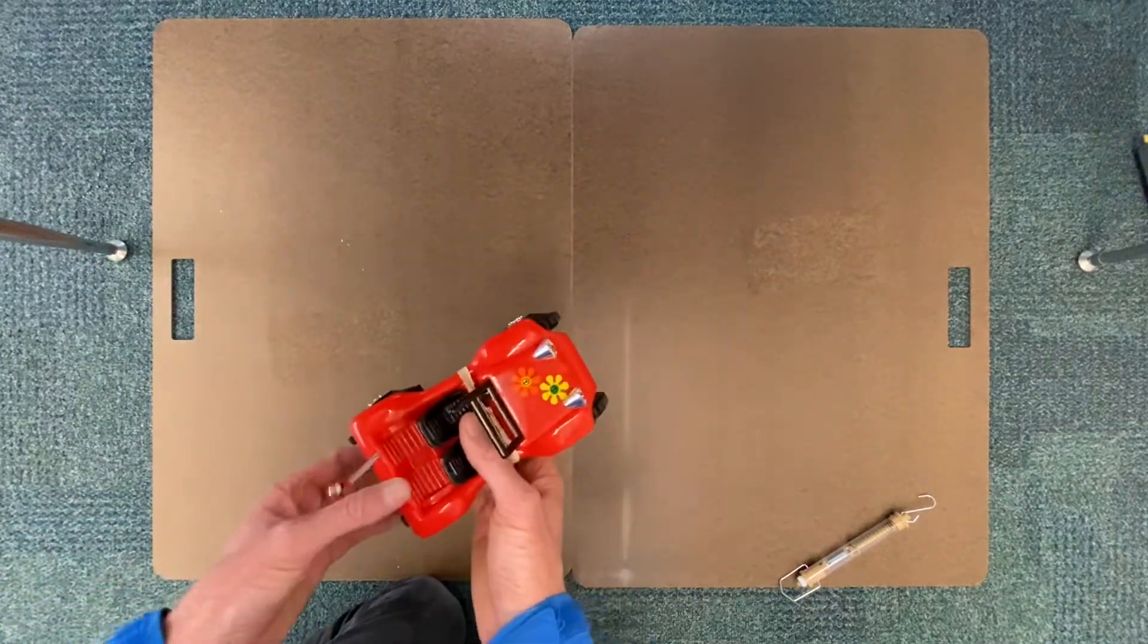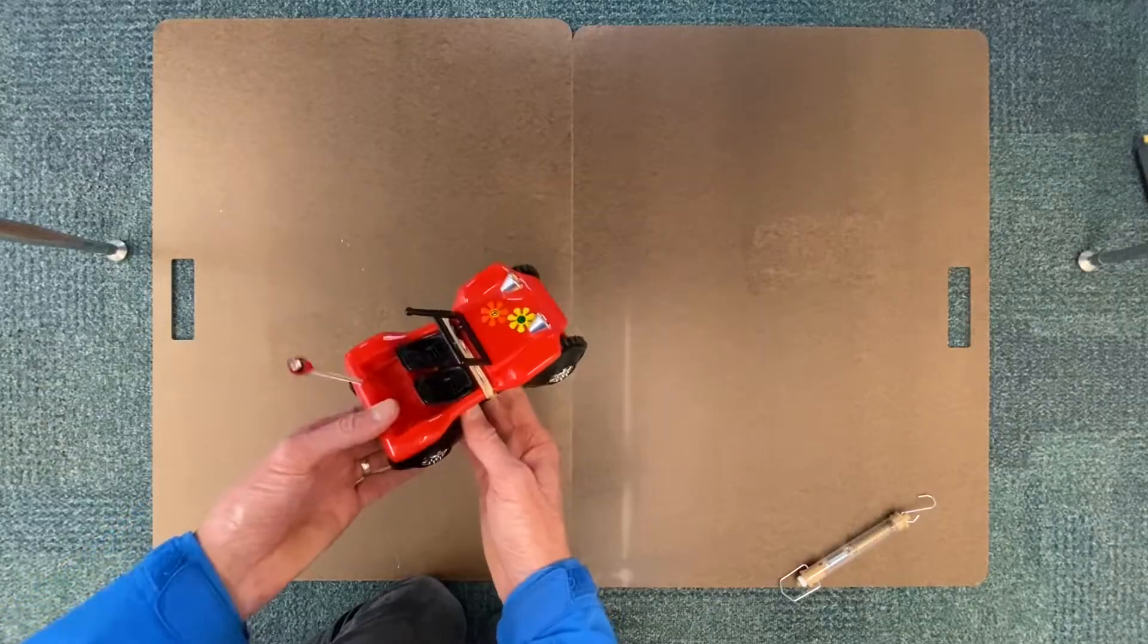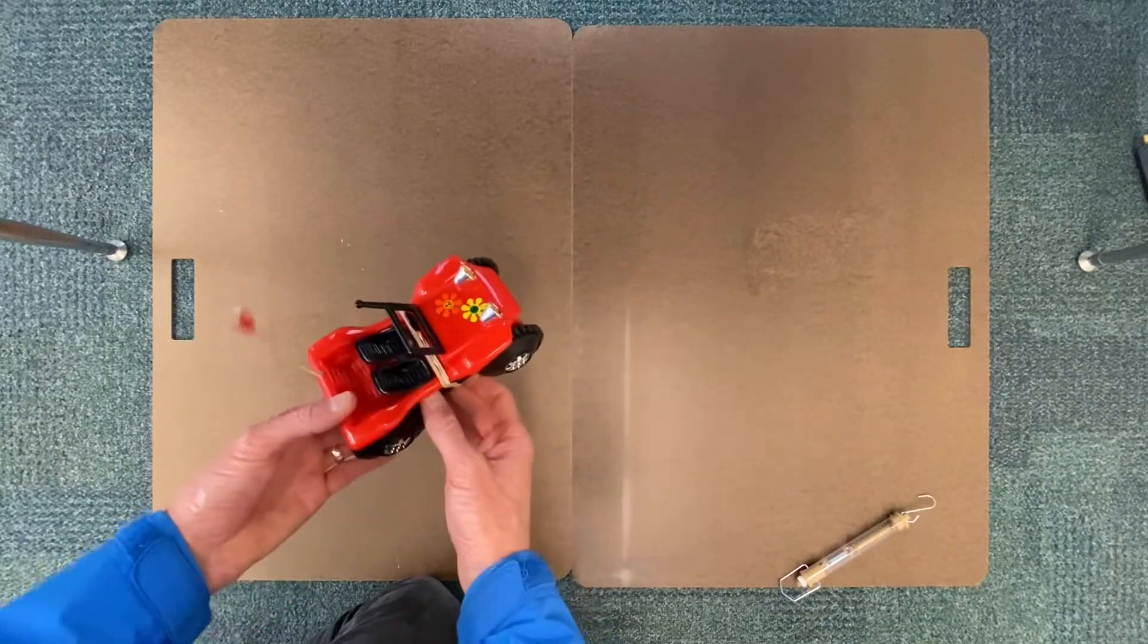Here's a demonstration of how circular motion works. So here's a toy car that has no steering wheel so it can only go straight.